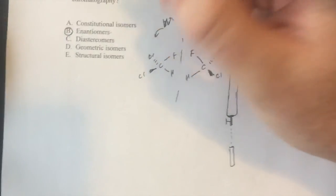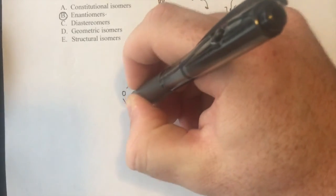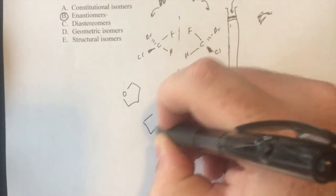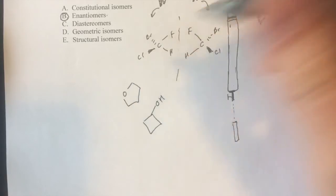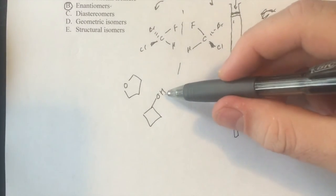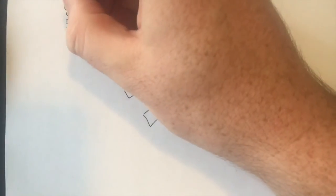Constitutional isomers can very easily be separated. You know, think of something like, you can just use an ether versus an alcohol. These guys will have very different physical parameters. This guy can do hydrogen bonding, whereas this one cannot. So obviously they can.